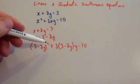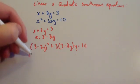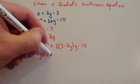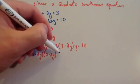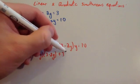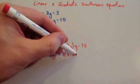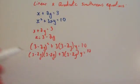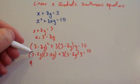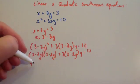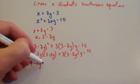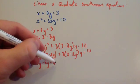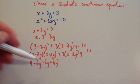Remember whenever you've got a bracket squared it means you've got to multiply the bracket by itself. I'm going to write the bracket out beside itself and use FOIL to expand it. Expanding gives: 3 times 3 is 9, 3 times minus 2y is minus 6y, minus 2y times 3 is minus 6y, and minus 2y times minus 2y is plus 4y squared.